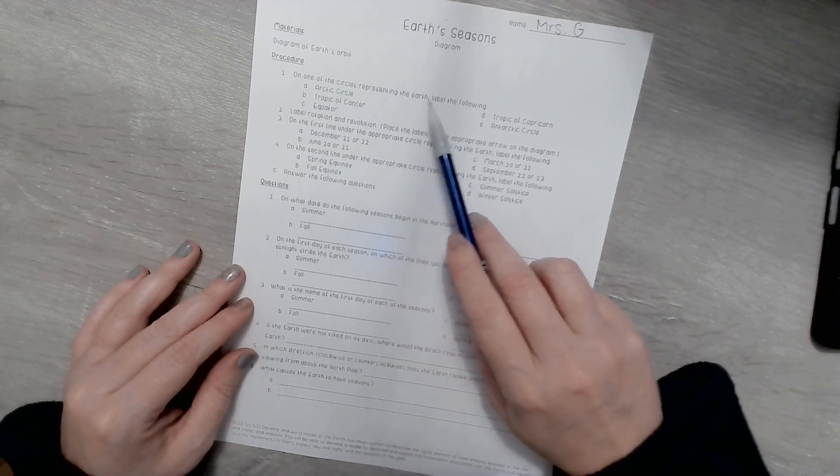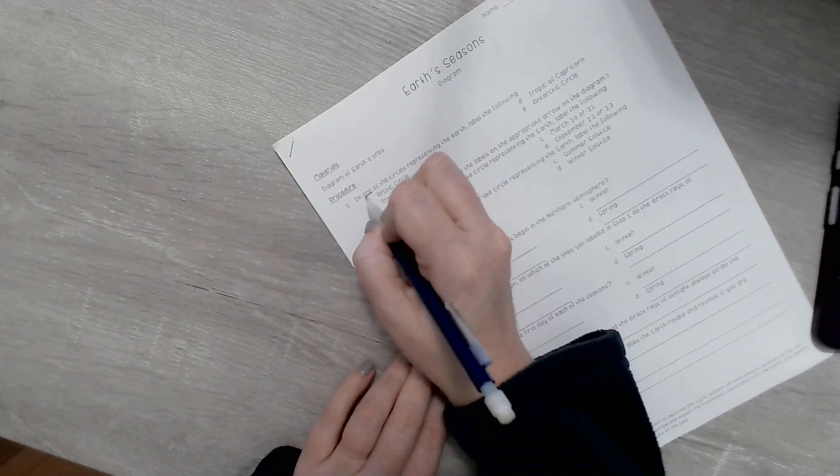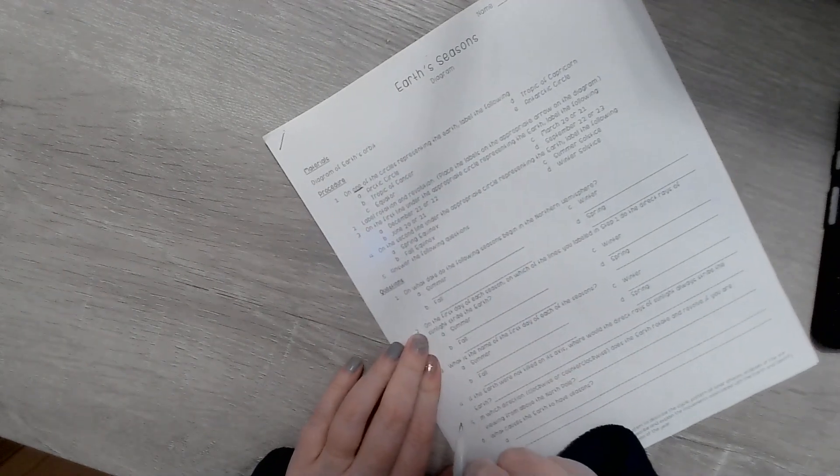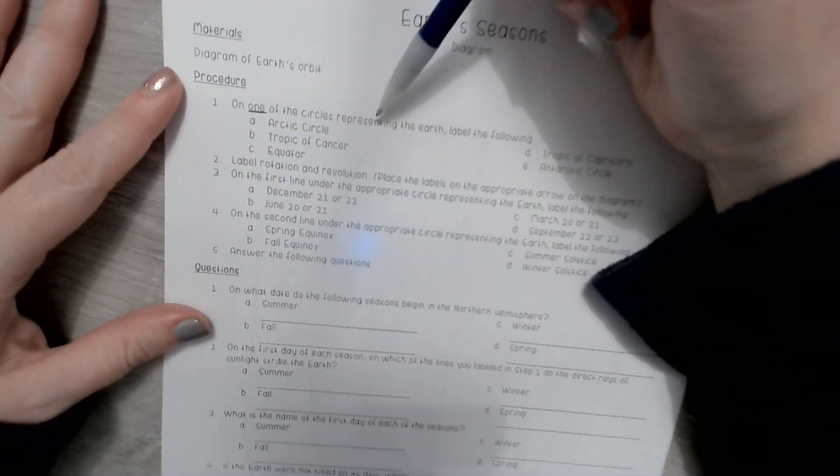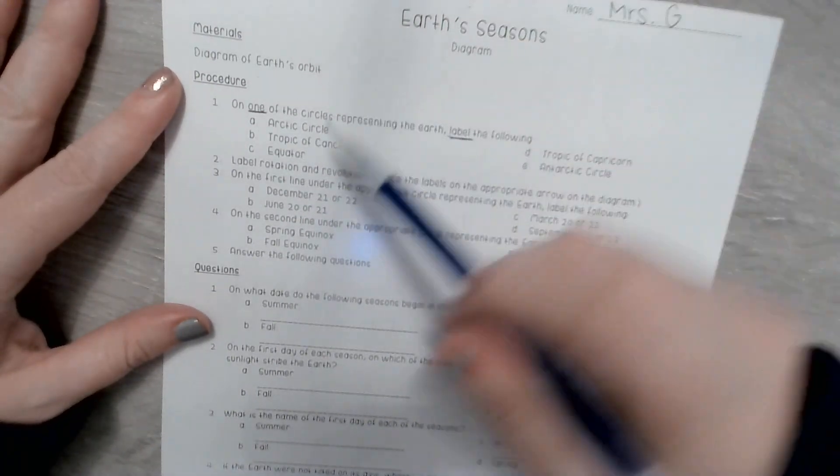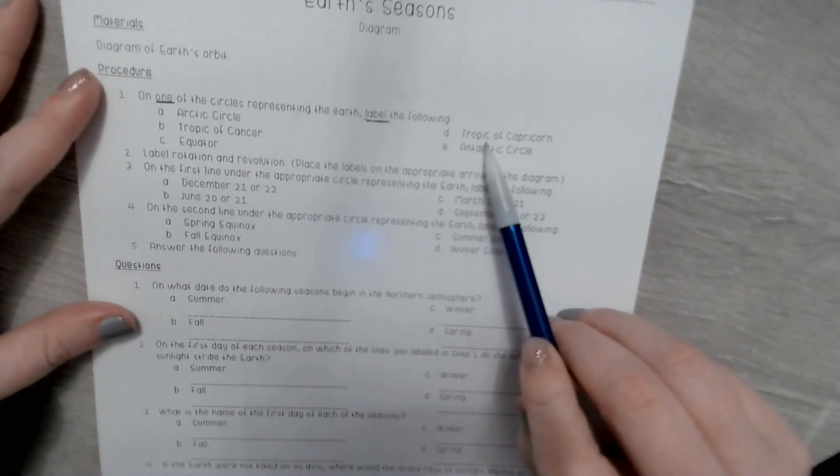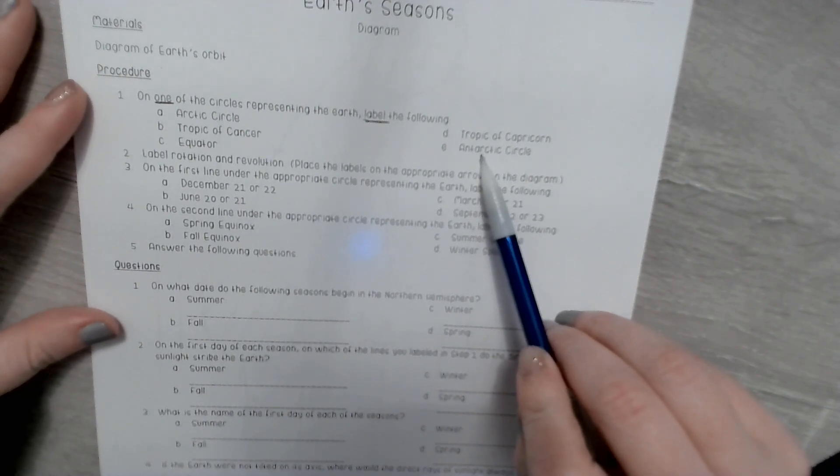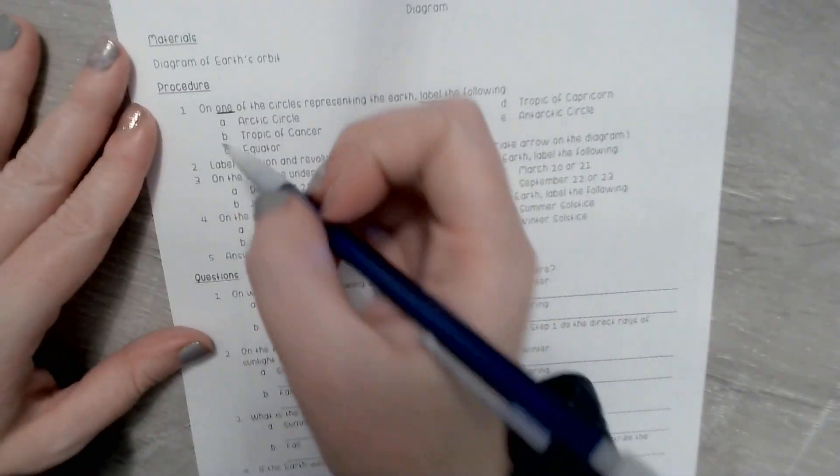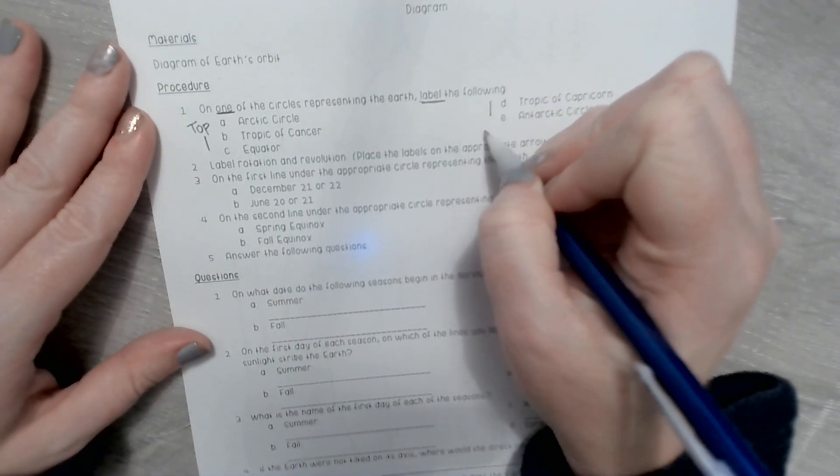Your procedures: on one of the circles representing the Earth, label the following. So first of all, I only need to label these on one of the circles representing the Earth. And then I need to be sure to label the Arctic Circle, the Tropic of Cancer, the Equator, the Tropic of Capricorn, and the Antarctic Circle. Hint: they go in order from top to bottom.